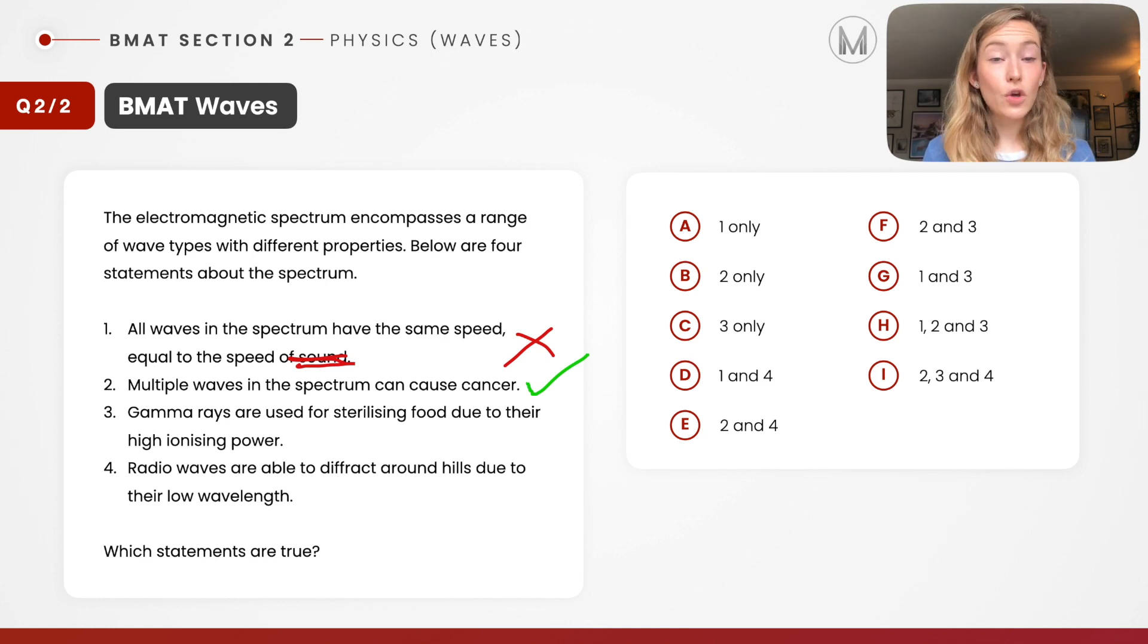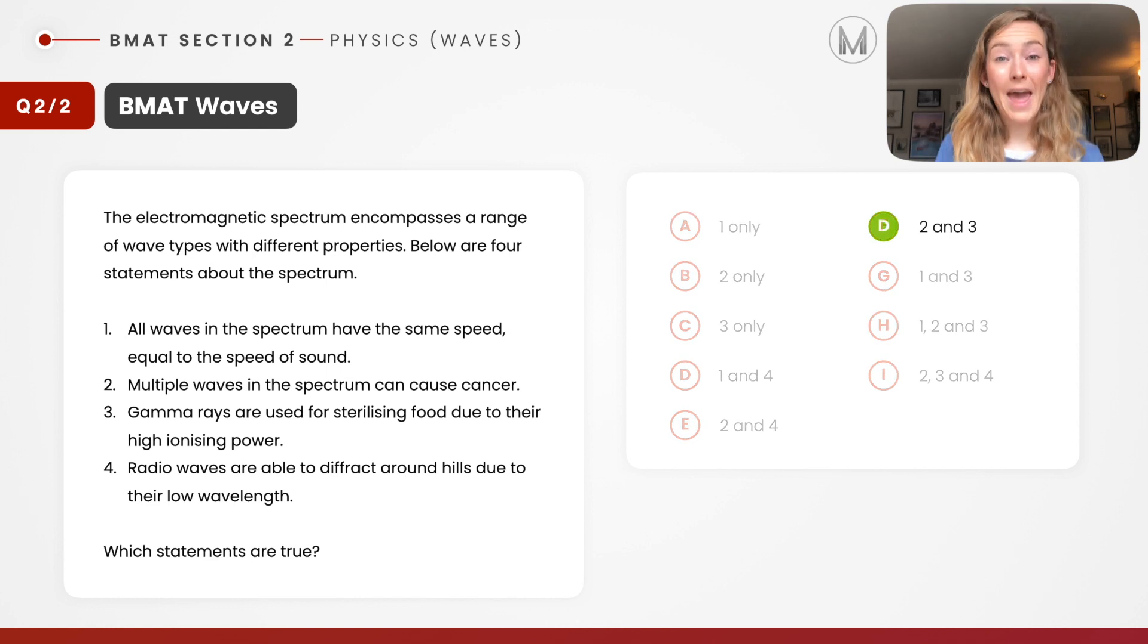Number three, gamma rays are used for sterilizing food due to their high ionizing power. Well, I know they have high ionizing power and they are indeed used to sterilize food. Let's give that a tick. And then we've got radio waves are able to diffract around hills due to their low wavelength. It's not low wavelength. It is their high wavelength. So that statement is also incorrect. I can see that statements two and three here are correct. Therefore, the option I want to pick is F.